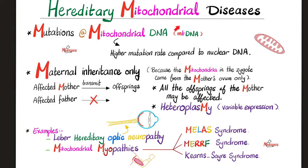Where did I get my mitochondrial DNA from? Only from the mother, not from the father, because the father left his tail outside. So the affected mother, who has a hereditary mitochondrial disease, can pass down this disease to all her offspring — males and females. But if daddy is affected, he cannot give a mitochondrial disease to his children. All offspring of the affected mother can be affected; all offspring of the affected father are not affected.